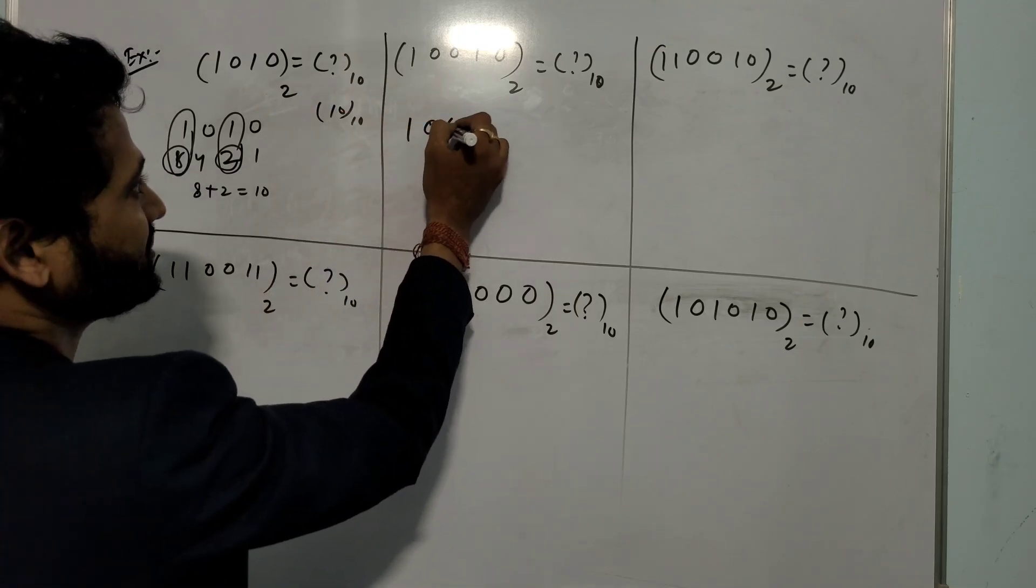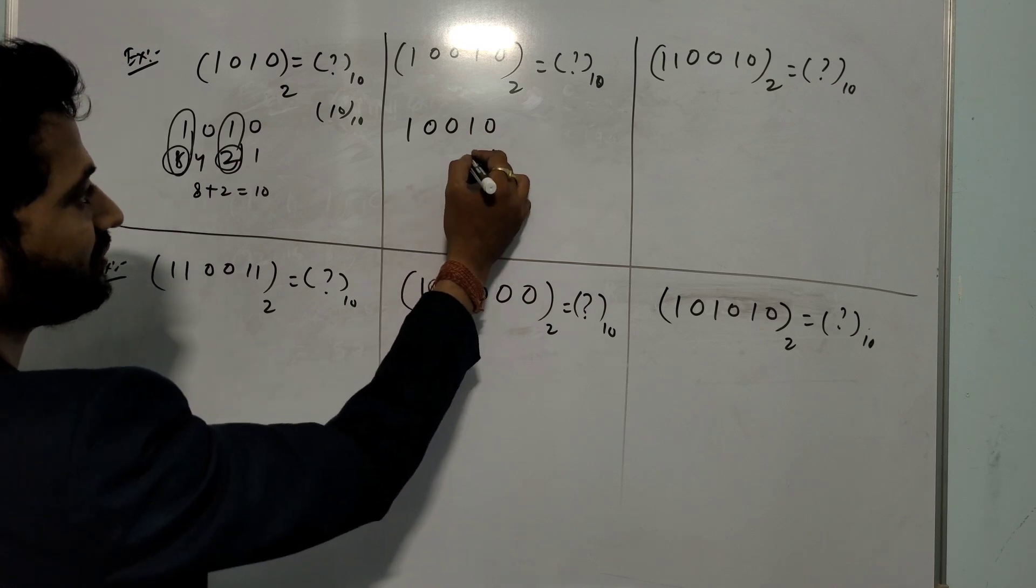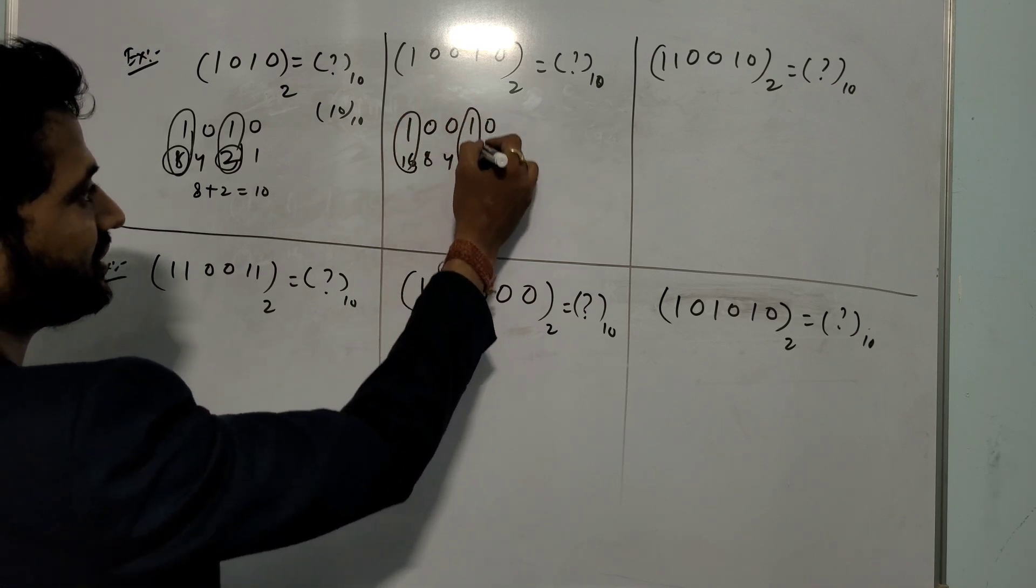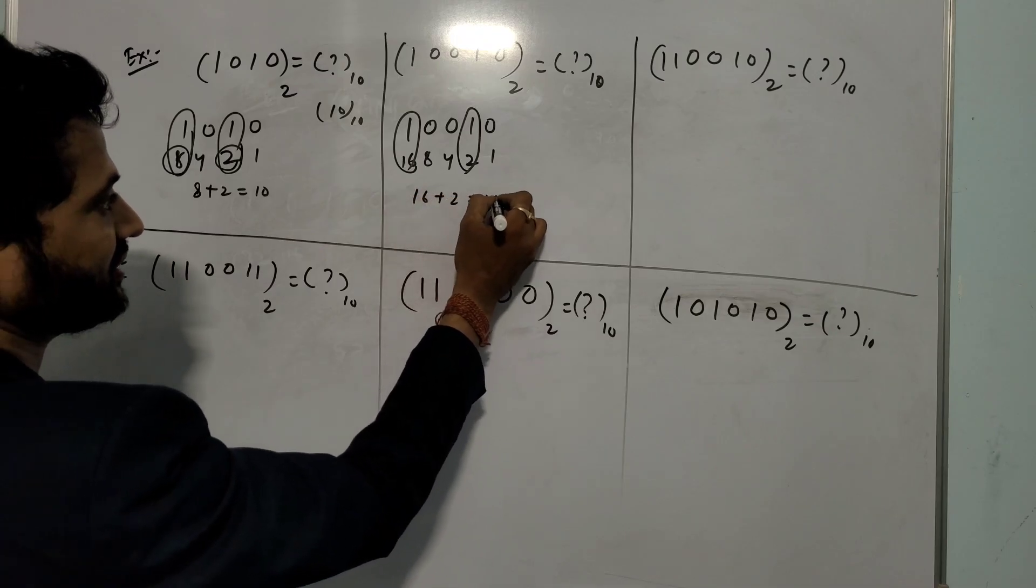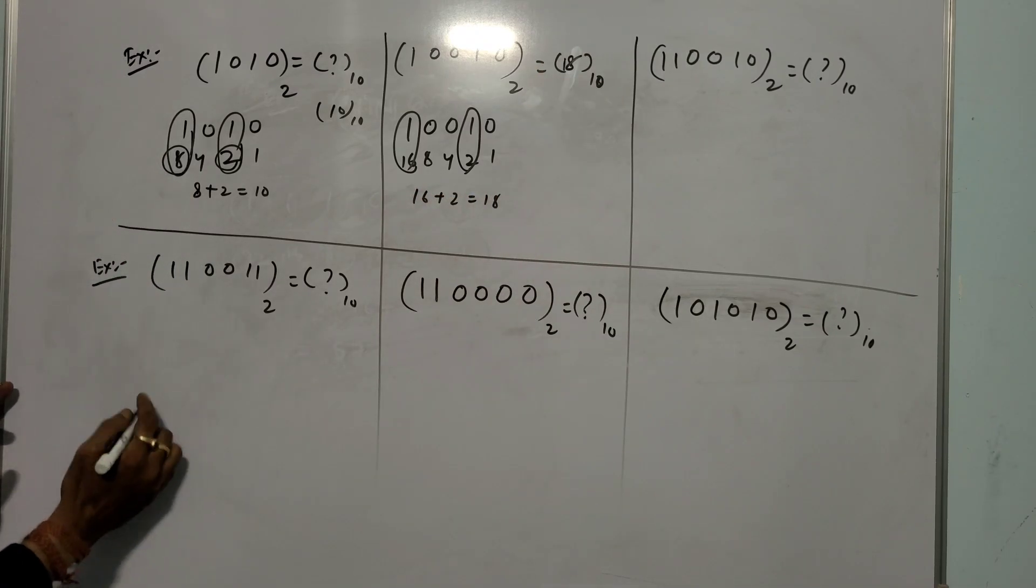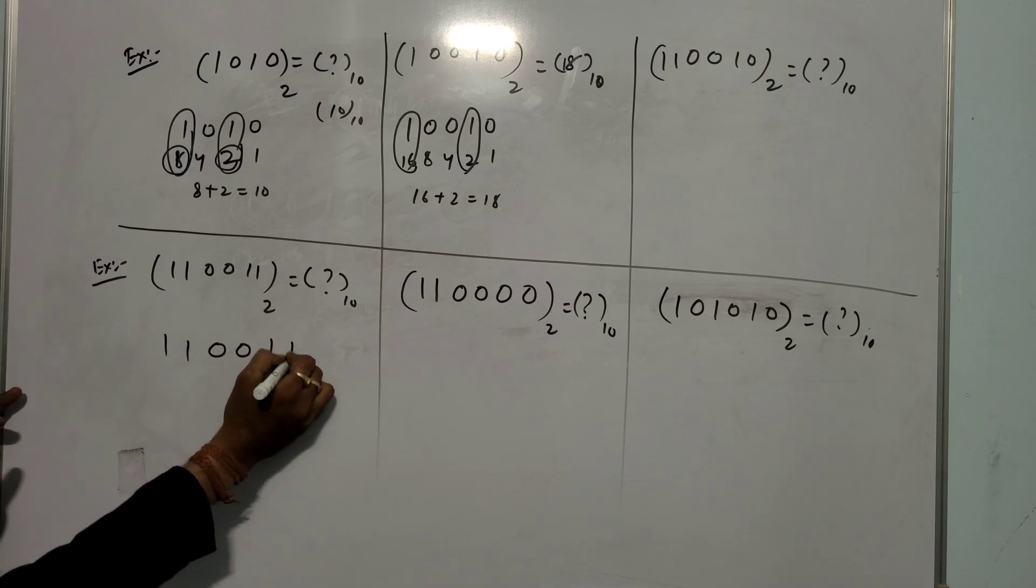I will write 10010. What is the answer? 1, 2, 4, 8, and 16. You take this value only. So 16 plus 2 is 18. So answer is 18.